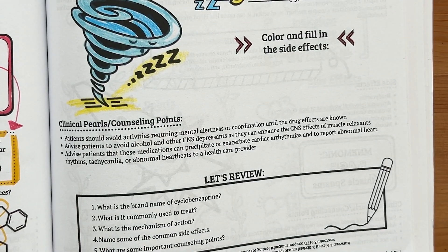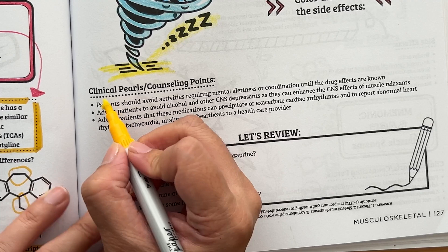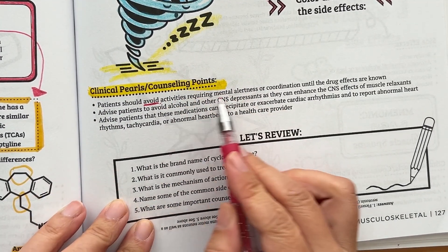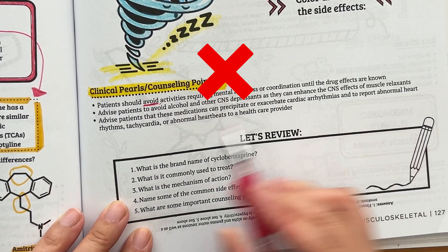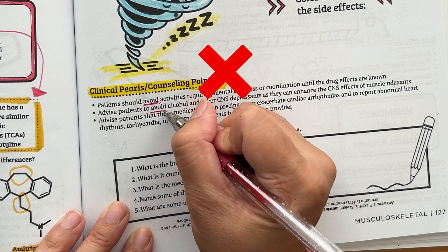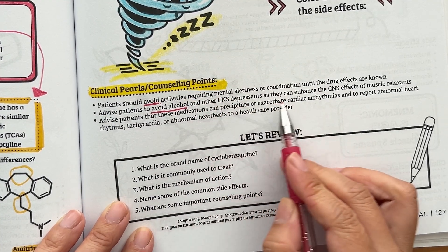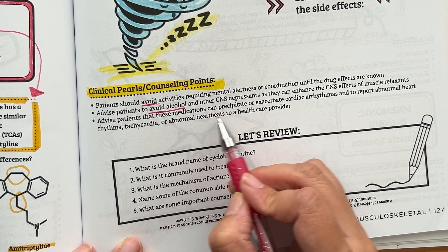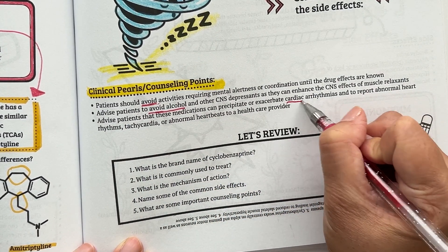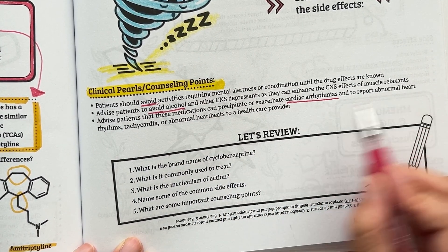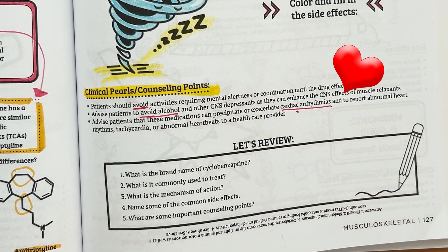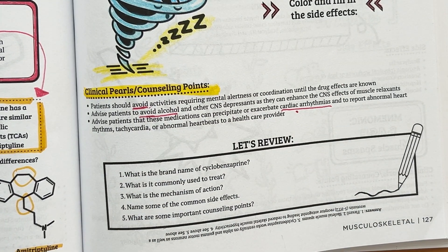Clinical pearls and counseling points: since this medication causes sedation or somnolence, patients should avoid activities requiring mental alertness or coordination until the drug effects are known. Advise patients to avoid alcohol and other CNS depressants as they can enhance the CNS effects of muscle relaxants. Advise patients that this medication can precipitate or exacerbate cardiac arrhythmias and to report abnormal heart rhythms, tachycardia, or abnormal heartbeats to a healthcare provider.